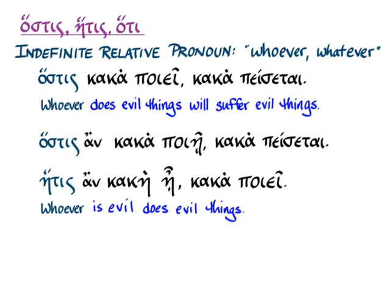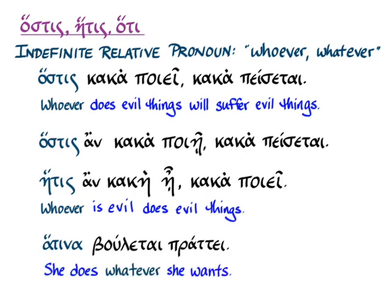But you don't have to have this pronoun or adjective in the nominative. ἅτινα βούλεται πράττει. She does whatever she wants. So there, ἅτινα is the neuter plural, and you can see that it works very well to make a generalizing or indefinite statement there.